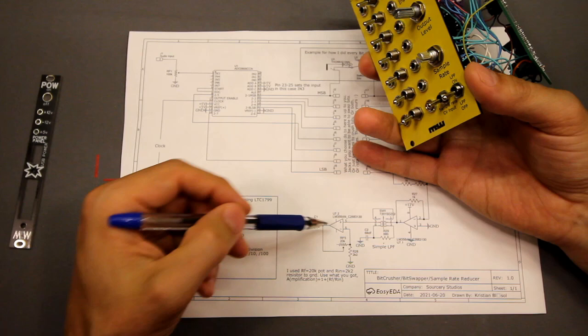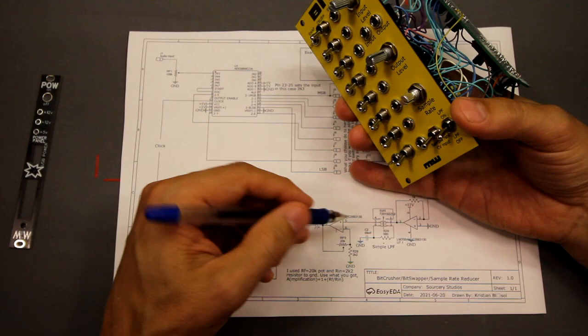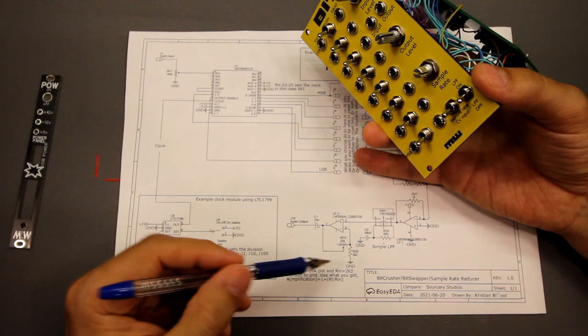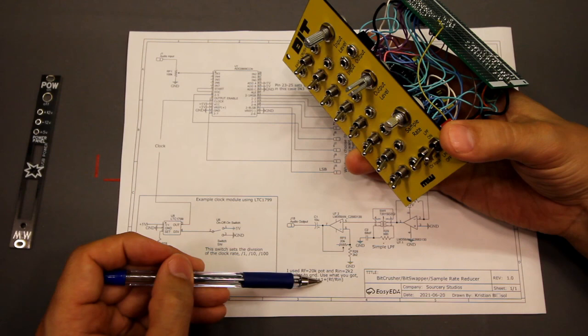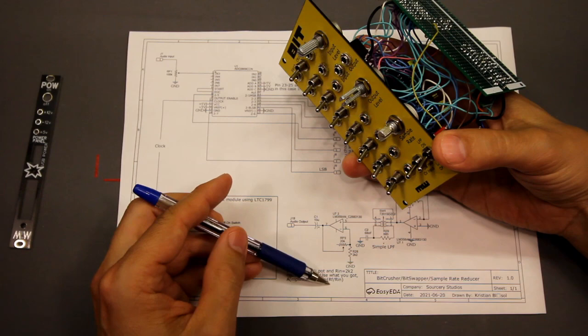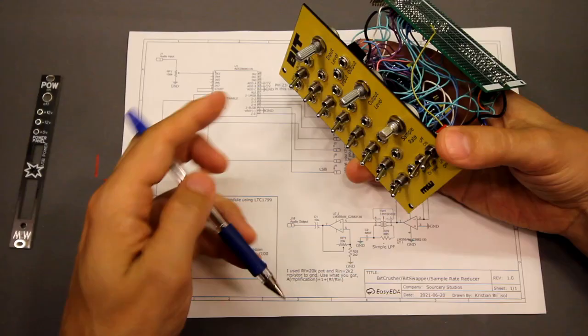Into an amplifier, op amp, op amp in an amplifier configuration. So we can crank it up. Again, use what you got. I used a 20K potentiometer and a 2K2 resistor to ground, which gives me an amplification of 1 and a little bit, so about 1 to 10 times amplification. Which is good if there's a really low signal input.